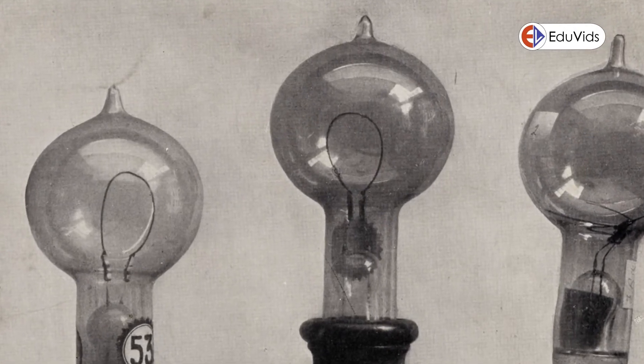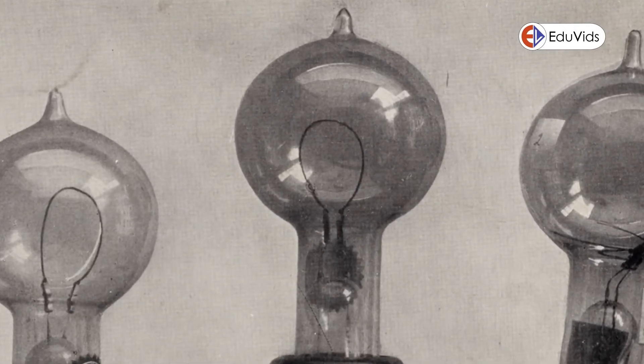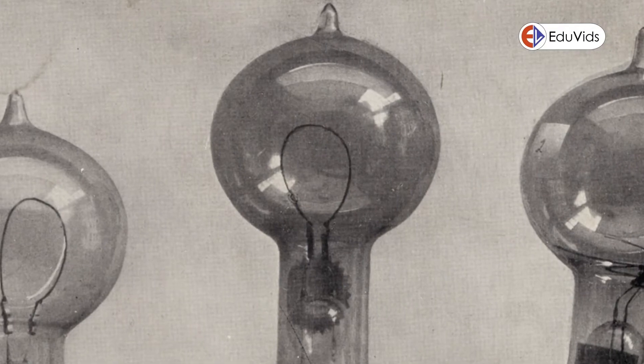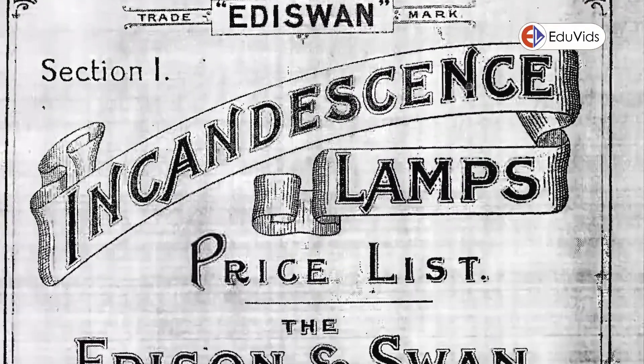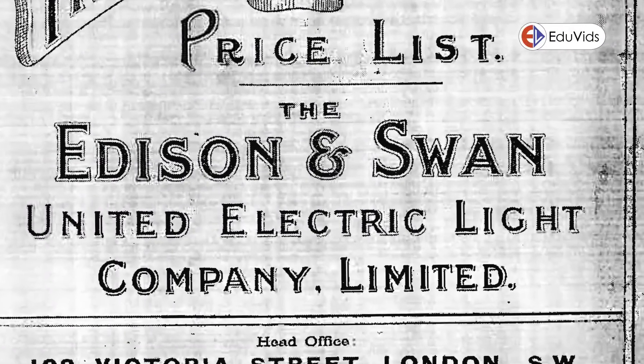Edison had switched to a carbon filament in the oxygenless enclosure and had produced a bulb that would last for 40 hours. Edison and Swann merged their companies and together they were the first to design a bulb that was commercially viable.